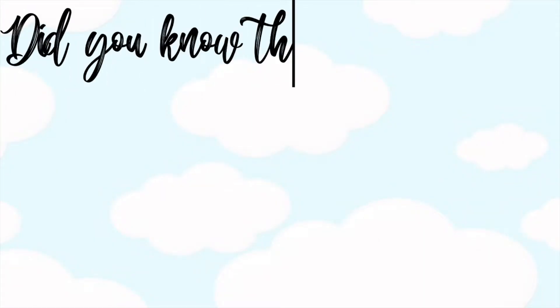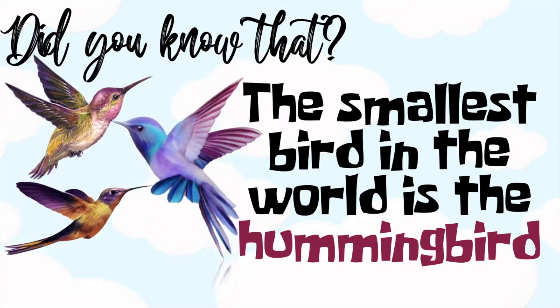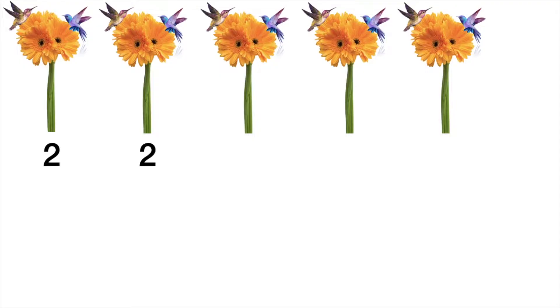Did you know that the smallest bird in the world is the hummingbird? Take a look at this flower. How many hummingbirds do you see on each flower? That's correct! We have two hummingbirds on each flower. To find the total number of hummingbirds, we need to add them together.